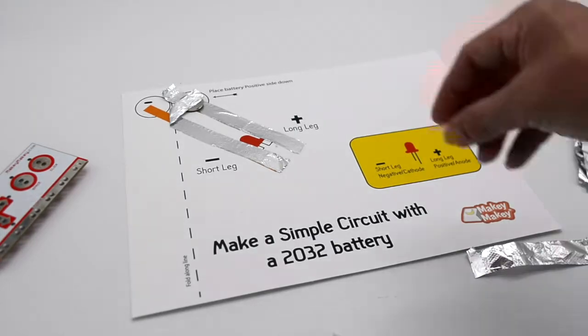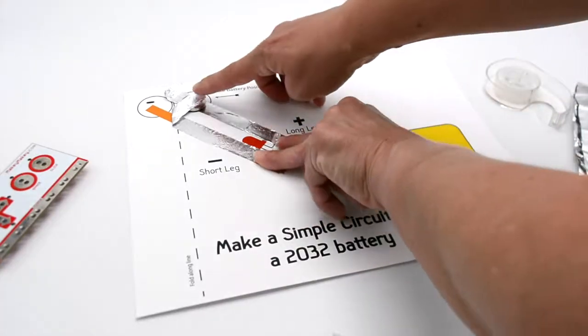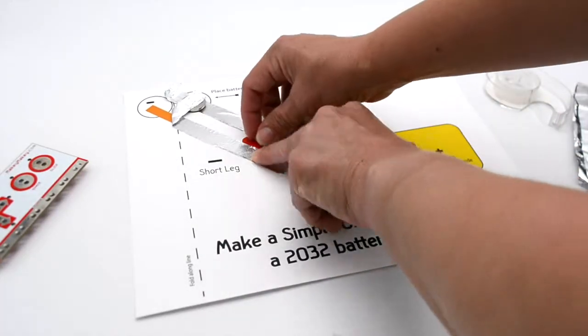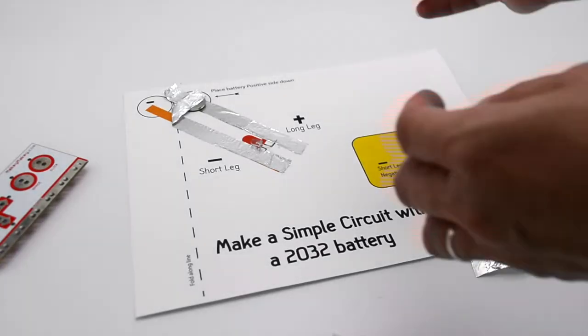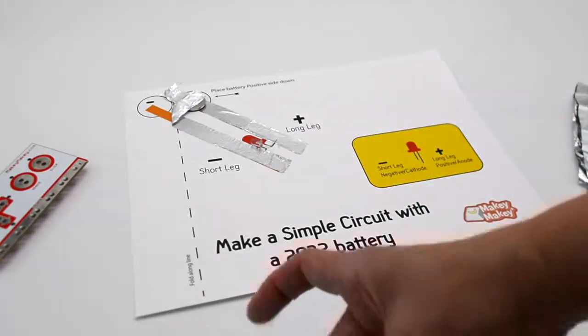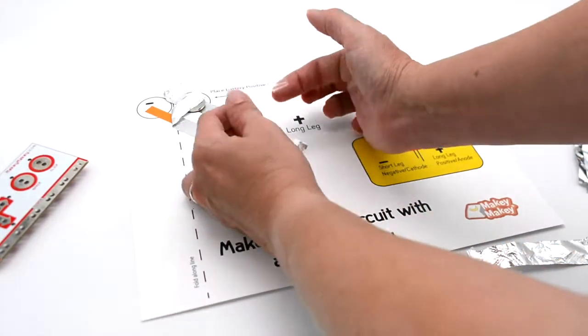And then take the positive side to the negative side. Making sure it works and we've got the right side, we're going to put a little piece of tape to hold that down. So one piece here, one piece there.